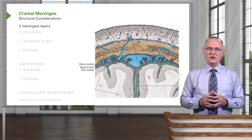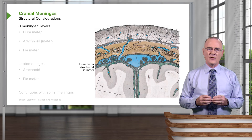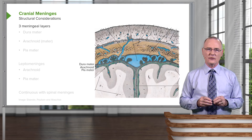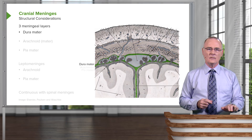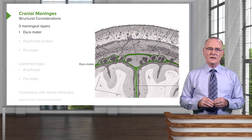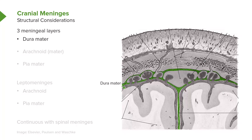There are three meningeal layers. The first is the dura mater, highlighted in green — this is the external or outermost meningeal layer. The middle of the three layers is referred to as the arachnoid, or arachnoid mater, also shown in green, and it is a thinner structure.